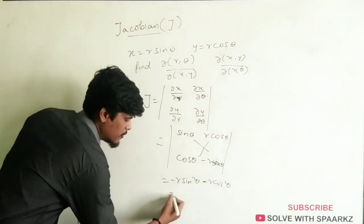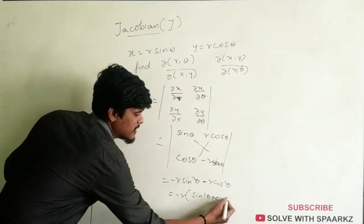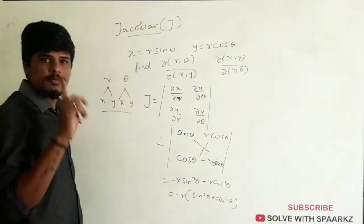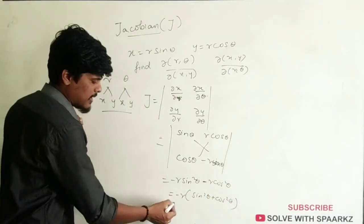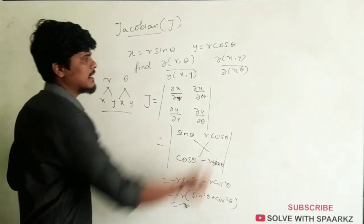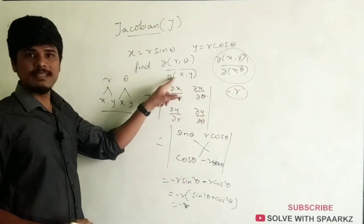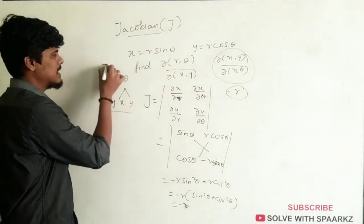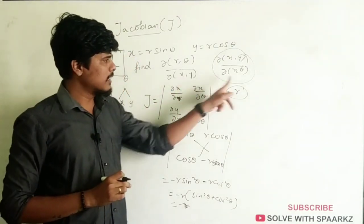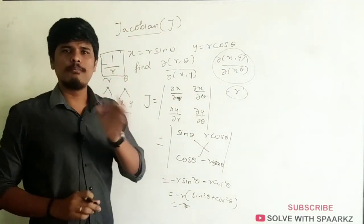Let's take minus r. So what is remaining? sin²θ plus cos²θ. So sin²θ plus cos²θ equals 1 — it's simple. What is the answer? Minus r is the answer. And the reciprocal of that? Minus 1 by r is the answer. So, if you want to differentiate doh R, Theta divided by doh X, Y, directly take the reciprocal: minus 1 by r.